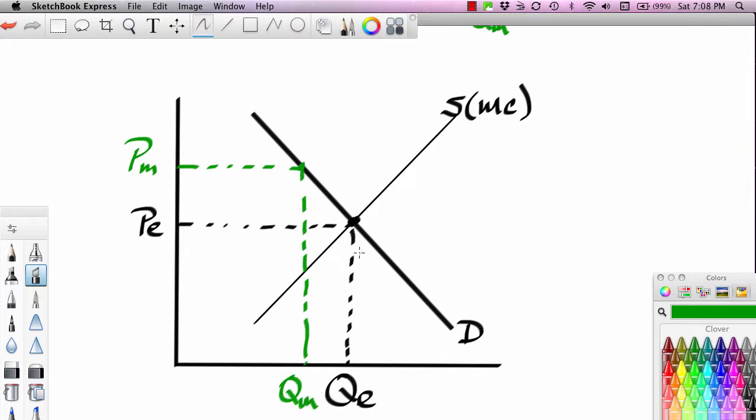So again, the effect of monopolization is to push the price above equilibrium and to push the output rate below competitive equilibrium.